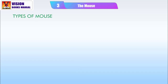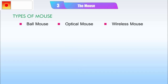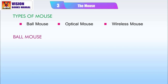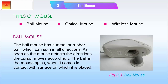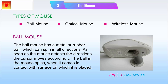Types of Mouse: Ball Mouse, Optical Mouse, and Wireless Mouse. The ball mouse has a metal or rubber ball which can spin in all directions. As soon as the mouse detects the direction, the cursor moves accordingly. The ball in the mouse spins when it comes in contact with the surface on which it is placed.